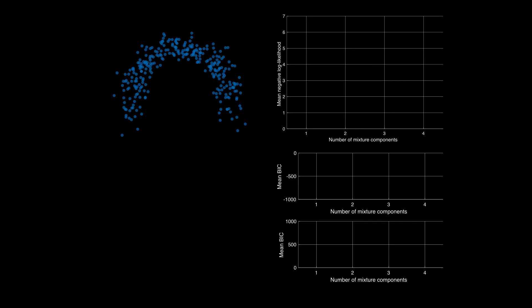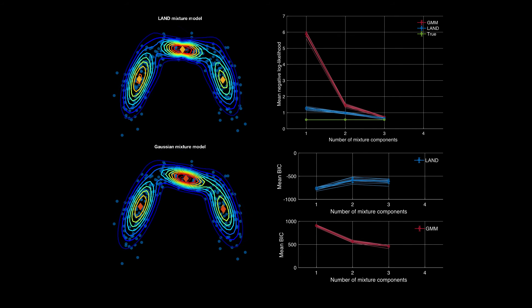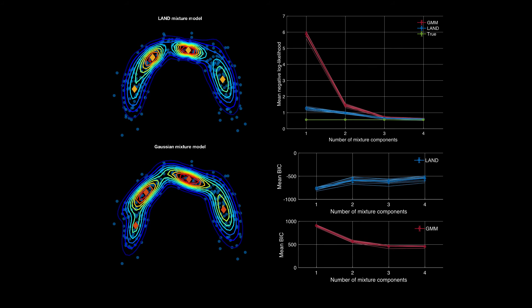We conducted both synthetic and real-world experiments. In the synthetic experiments, we fitted non-linear generative data, where we observed that the land learns faster the underlying distribution, while it favors for fewer components based on standard criteria.